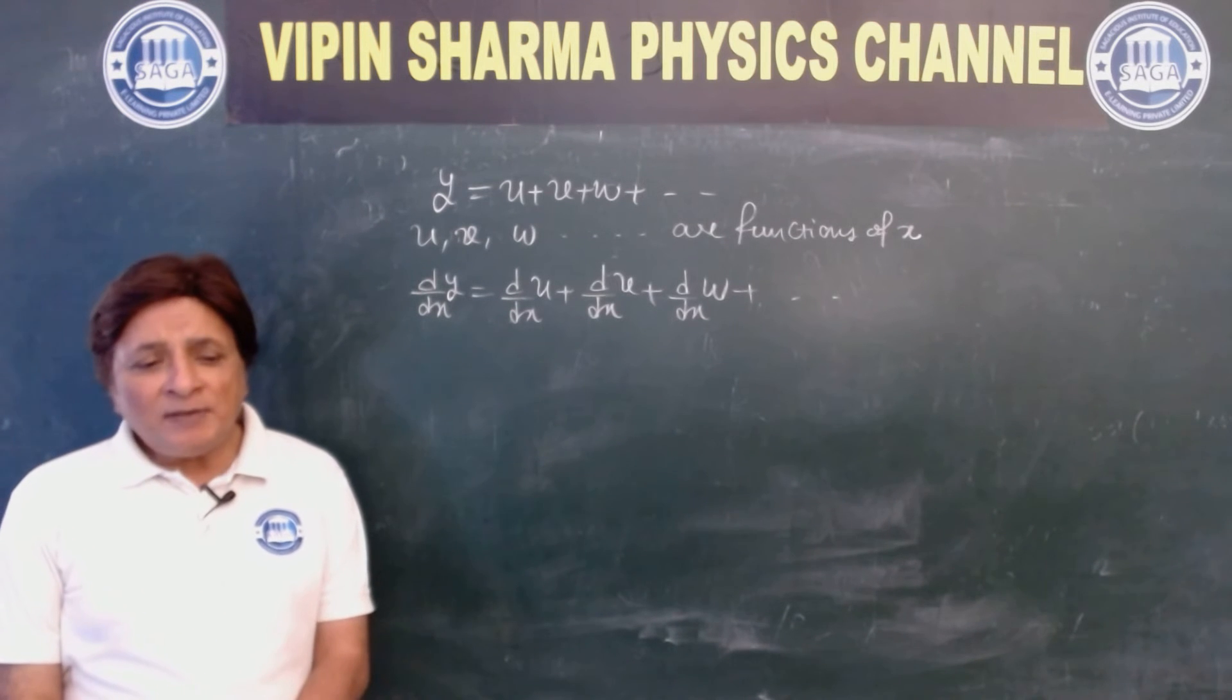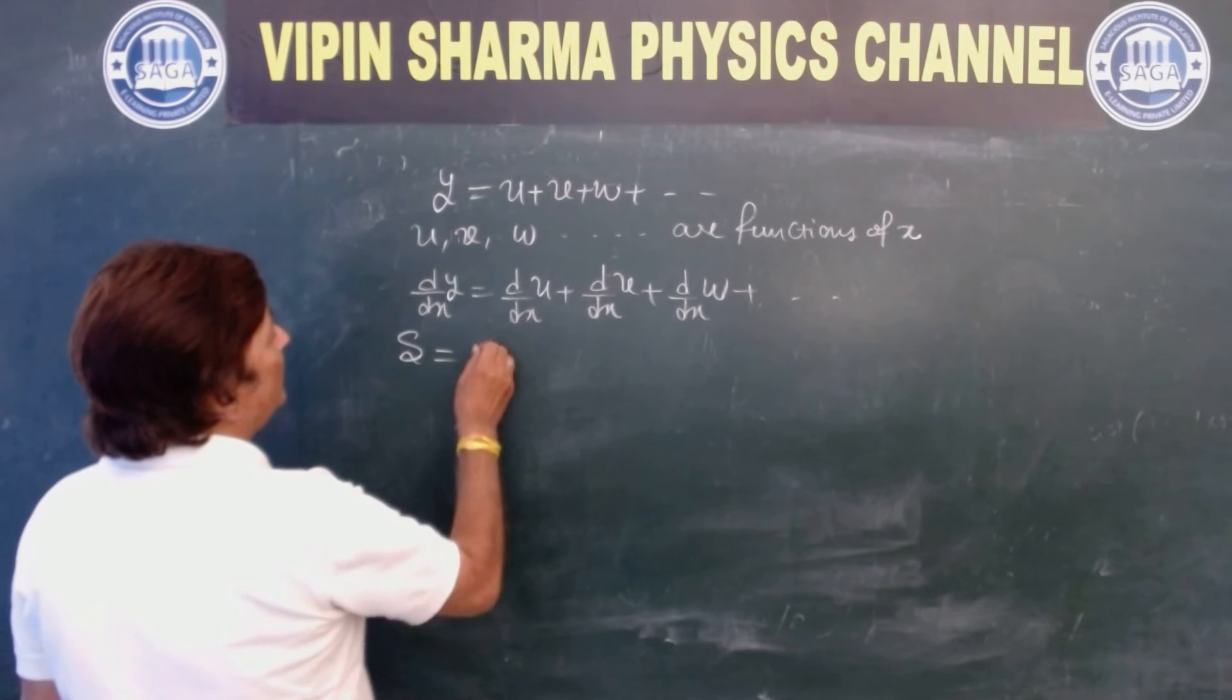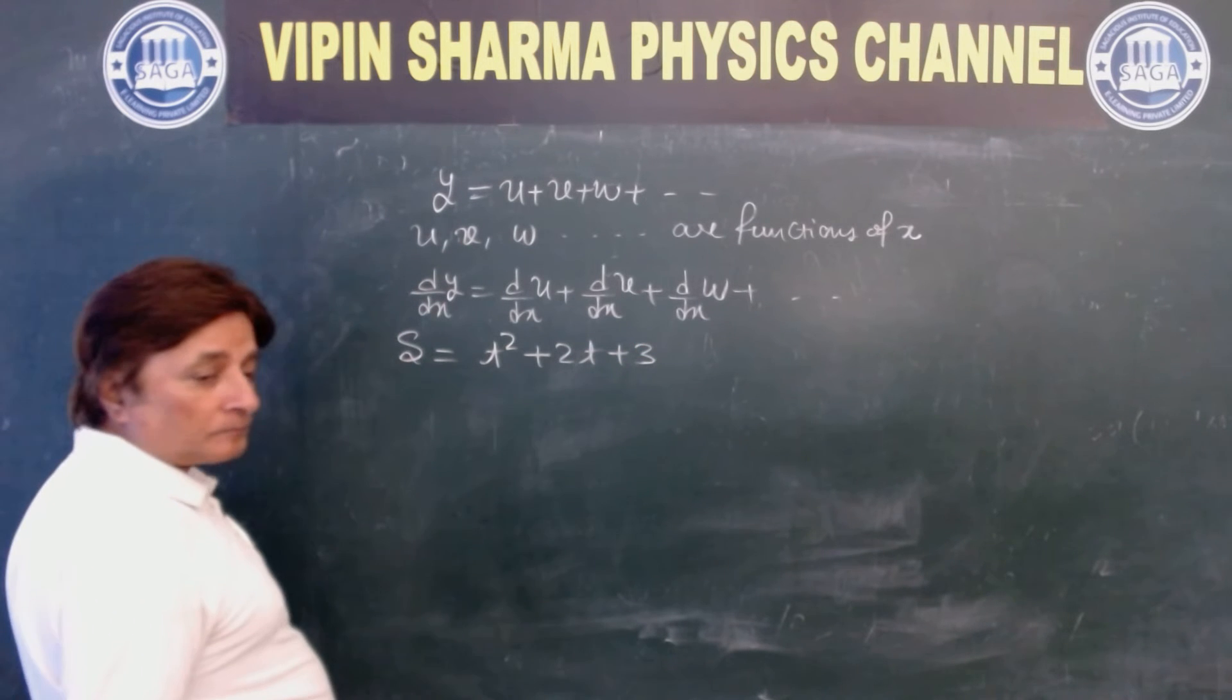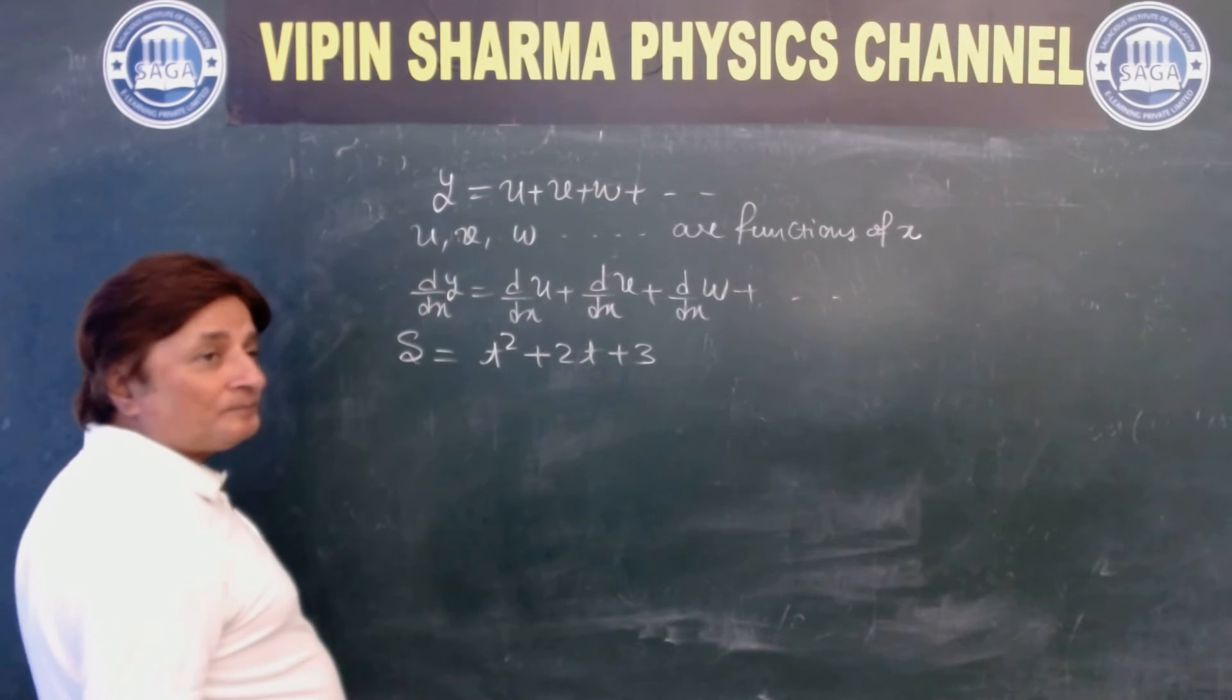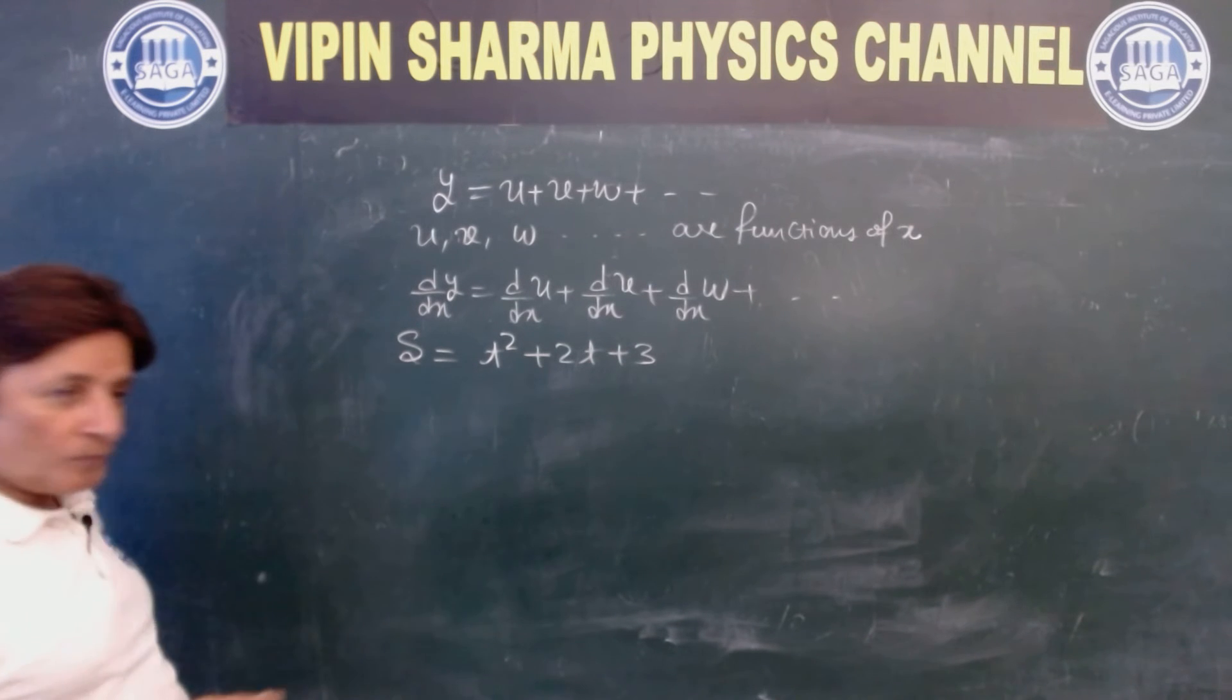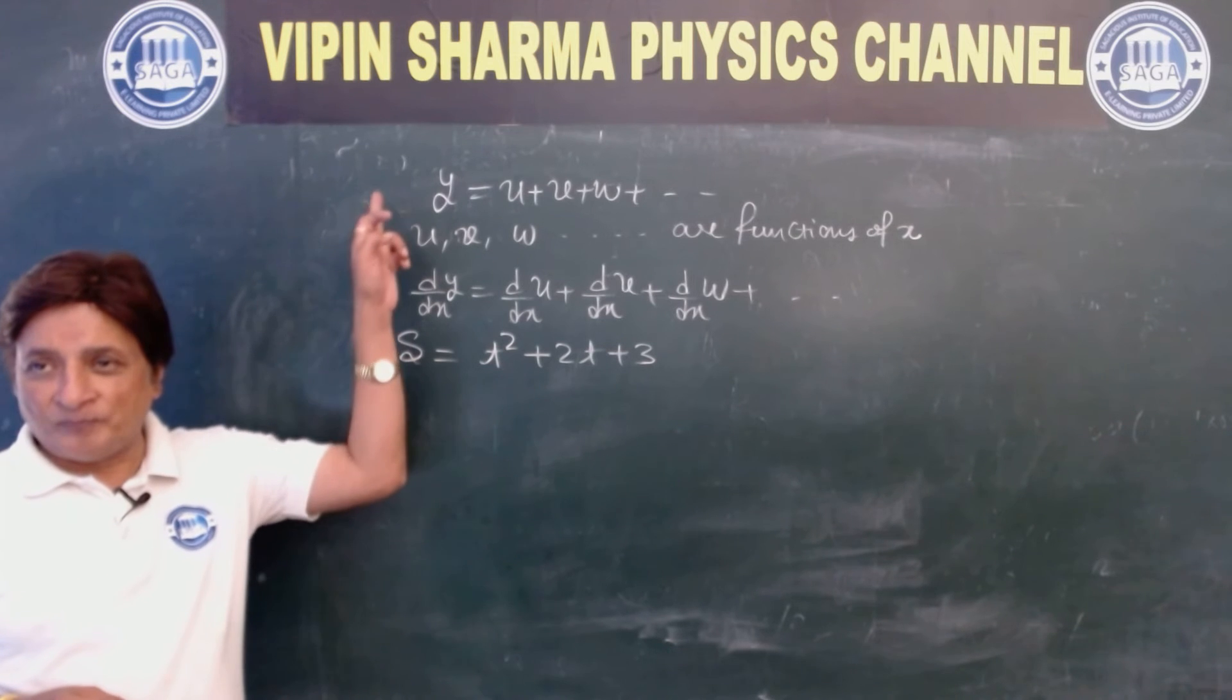Now I am going to tell you s is equal to t squared plus 2t plus 3. Now s is like y, and t squared, 2t, and 3 are like u plus v plus w. Correct. s is like y.